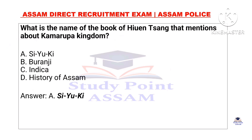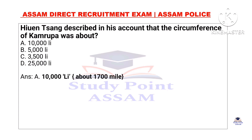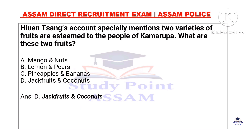What is the name of the book of Hiuen Tsang that mentioned the Kamrupa kingdom? Hiuen Tsang describes in his account the circumference of Kamrupa. Hiuen Tsang's accounts especially mention two varieties of fruits presented to the people of Kamrupa. Those two fruits are jackfruit and coconut.